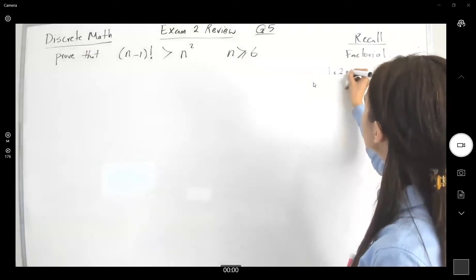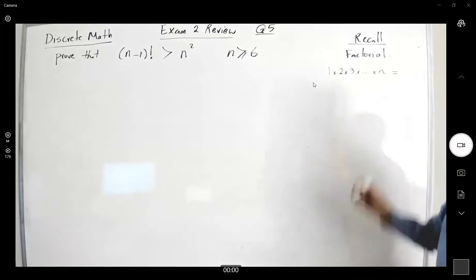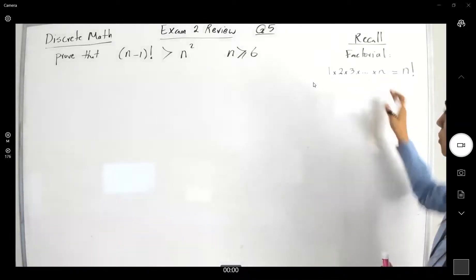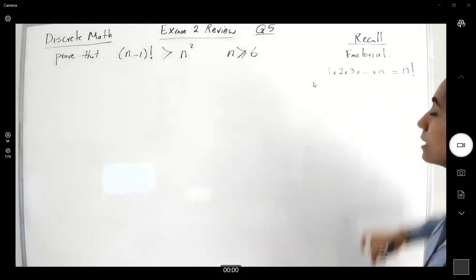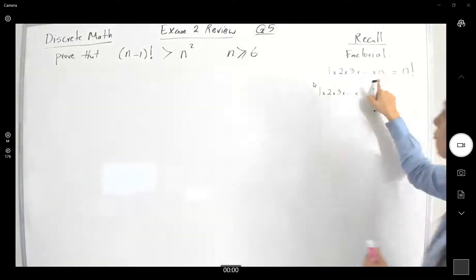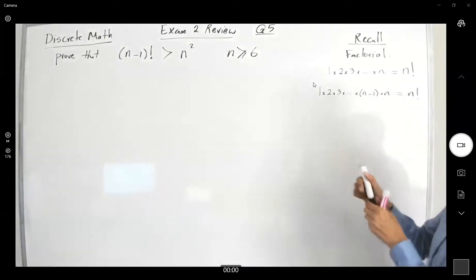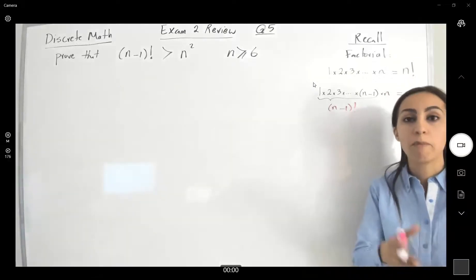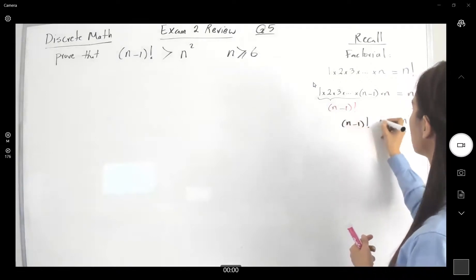We take consecutive numbers and multiply them together starting from one: one times two times three, and we go up to number n, and we write it in short format as n factorial — we put an exclamation mark next to it. We can also rewrite n factorial as one times two times three dot dot dot times n minus one, times n, which by definition equals n minus one factorial times n.